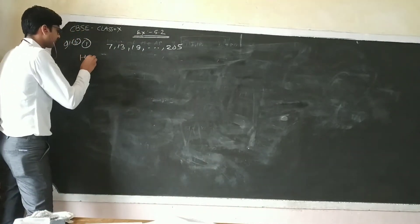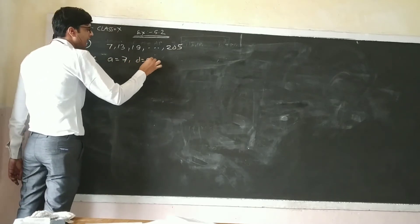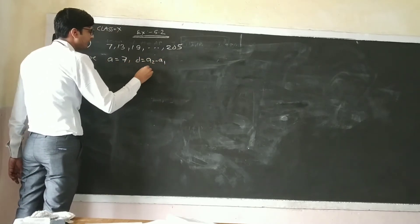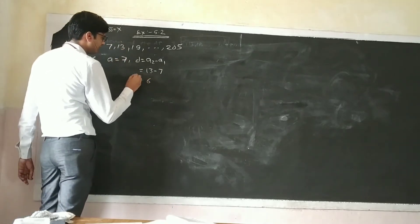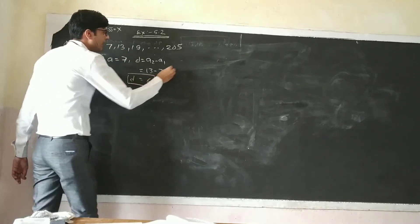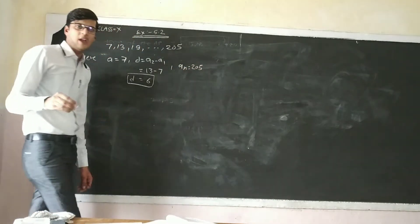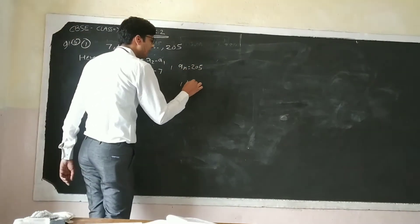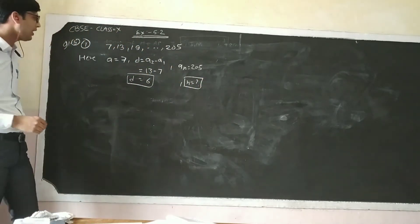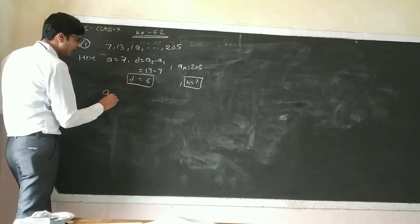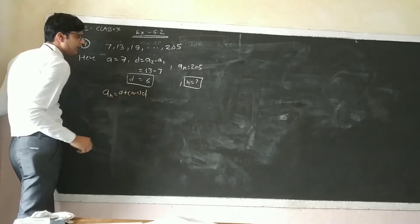So here the first term A is 7. The common difference D equals A2 minus A1, which is 13 minus 7, so D equals 6. The last term AN is given as 205. We need to find N. We know the formula: AN equals A plus (N minus 1) times D.